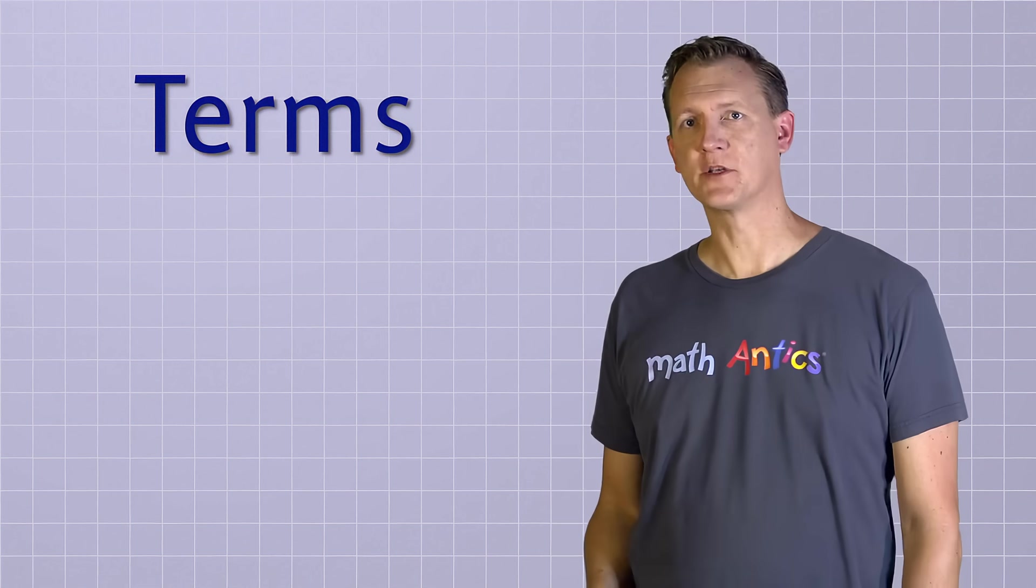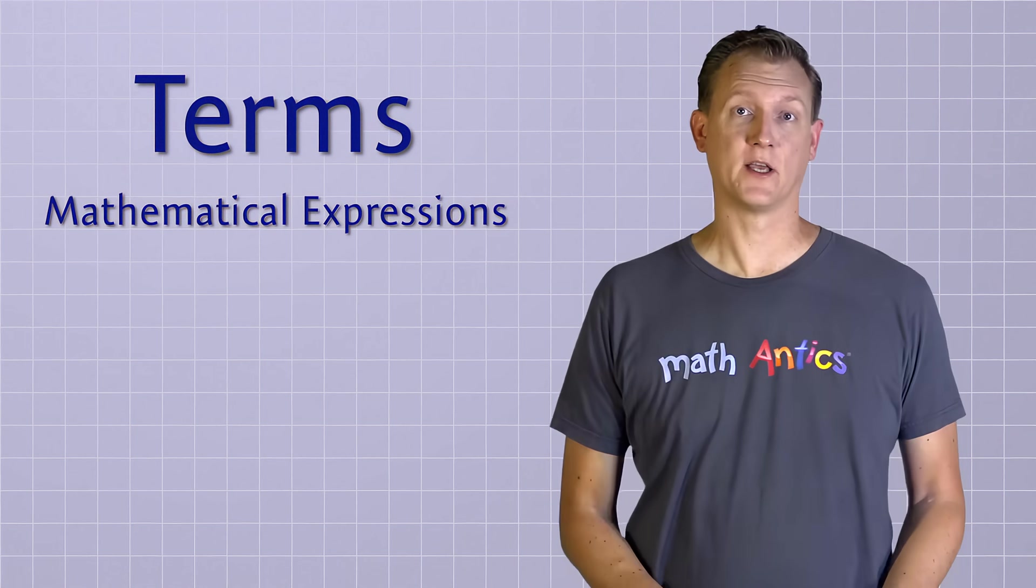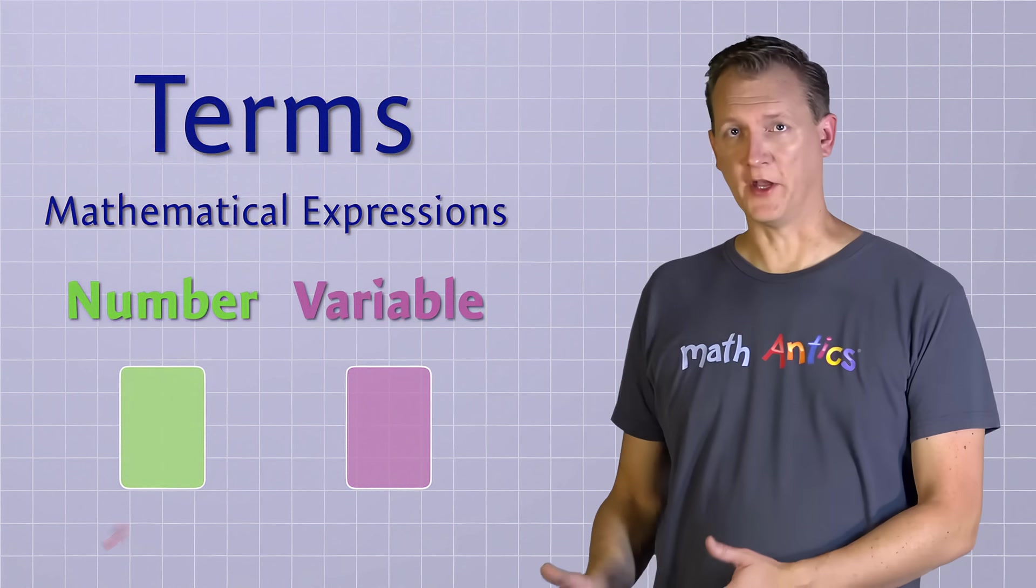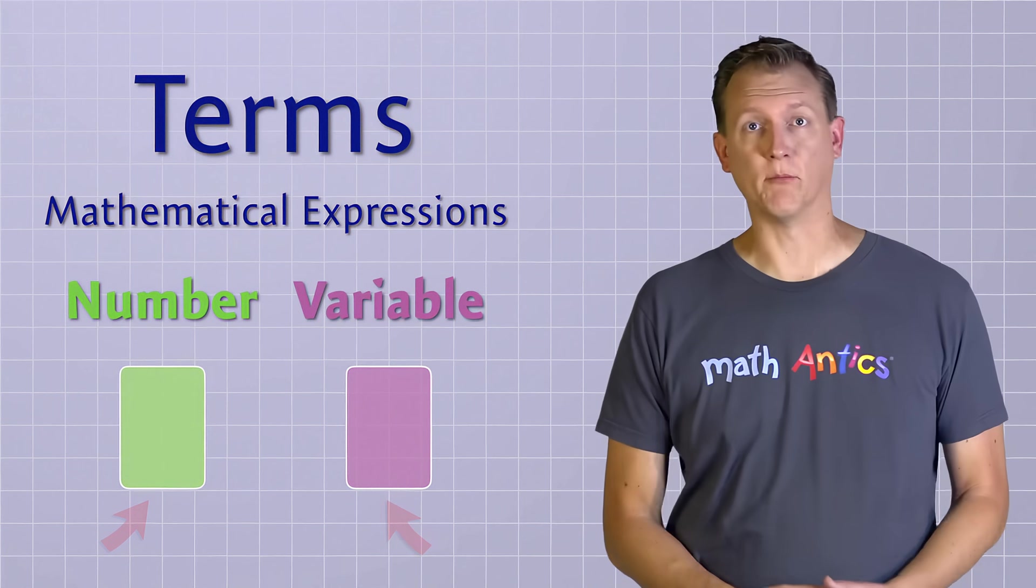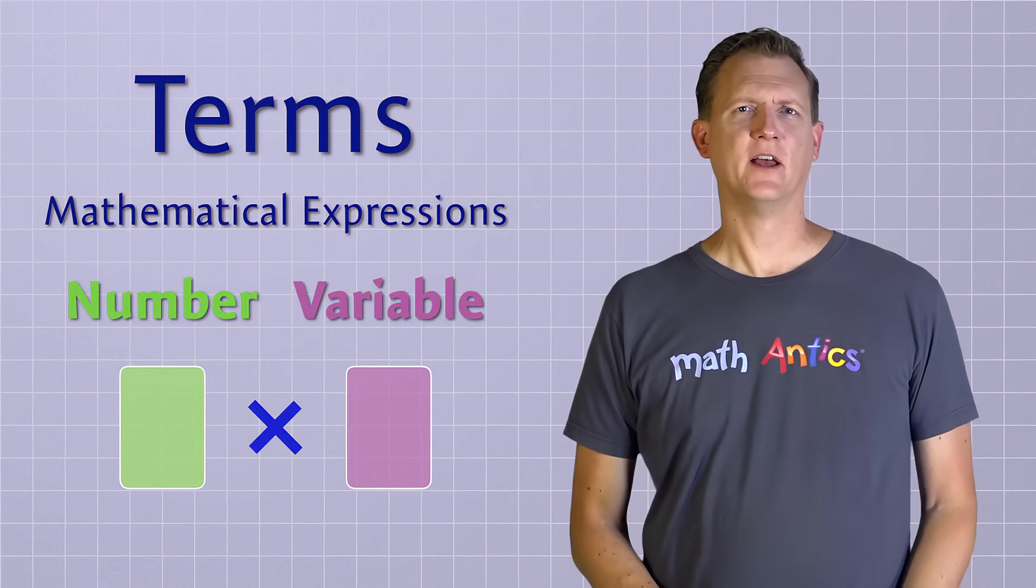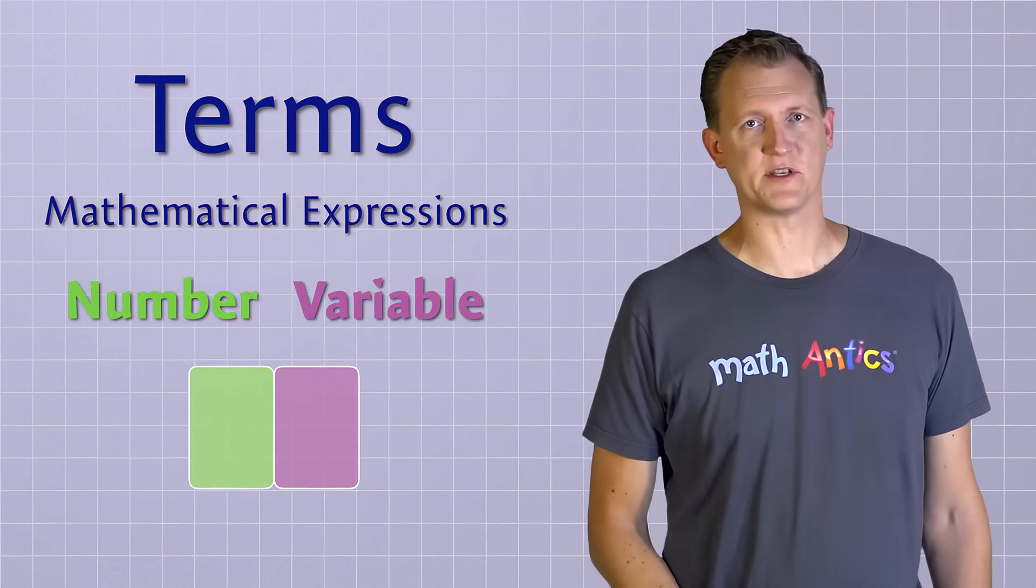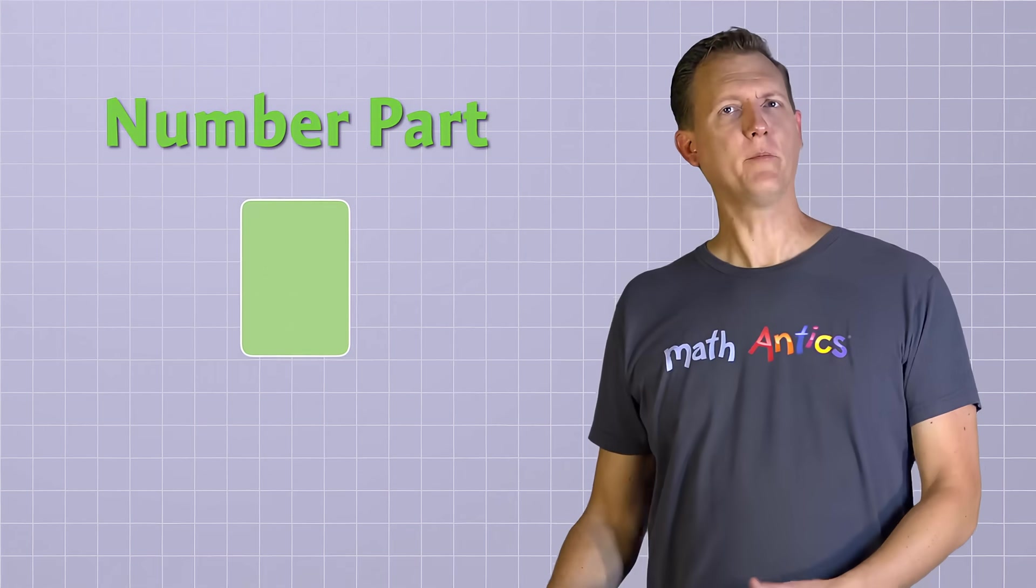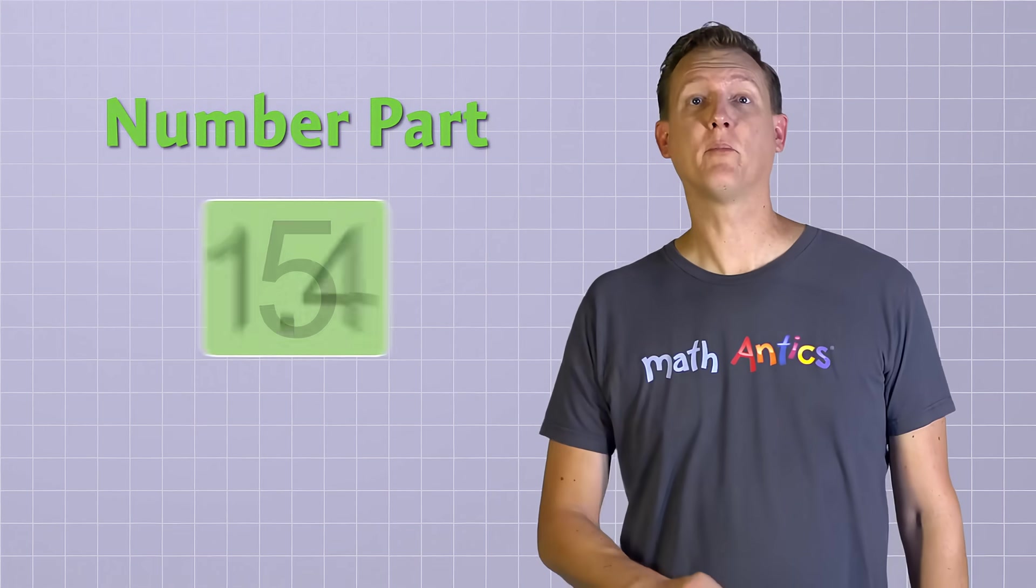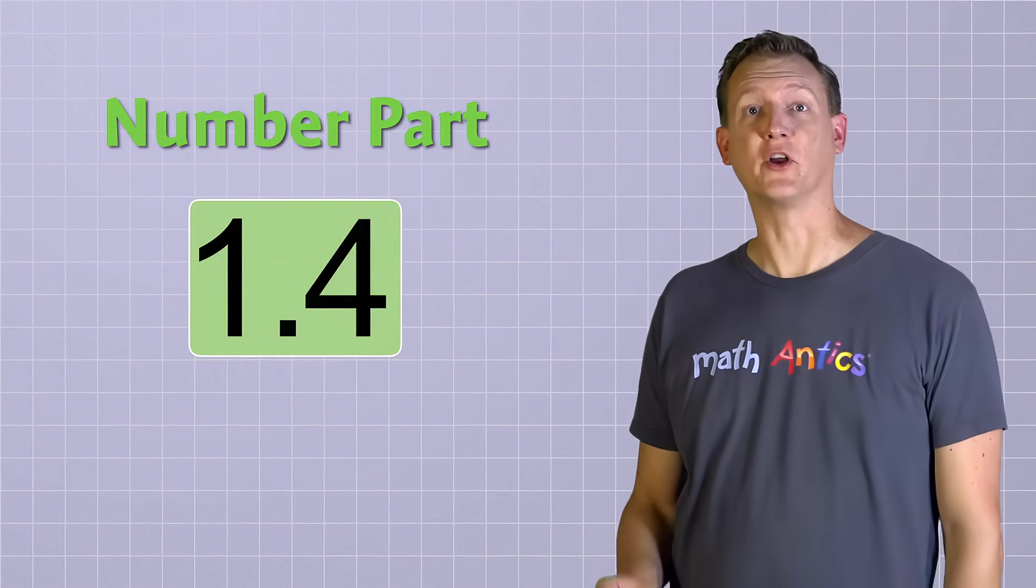In algebra, terms are mathematical expressions that are made up of two different parts: a number part and a variable part. In a term, the number part and the variable part are multiplied together. But since multiplication is implied in algebra, the two parts of a term are usually written right next to each other with no times symbol between them. The number part is pretty simple. It's just a number, like 2 or 5 or 1.4. And the number part has an official name. It's called the coefficient.